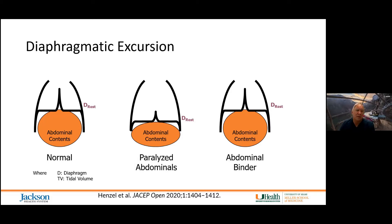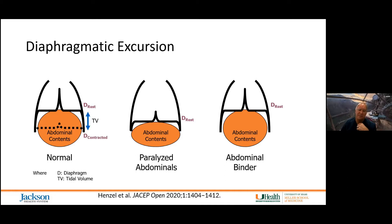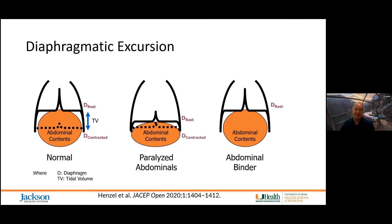The diaphragm is domed at its resting length, so under normal conditions when we contract the diaphragm, we have a fairly good tidal volume. However, if you have paralyzed abdominal muscles, the diaphragm is no longer domed but in a somewhat flattened position. From that position, the tidal volume is markedly diminished, and the person will have to breathe much faster to compensate.